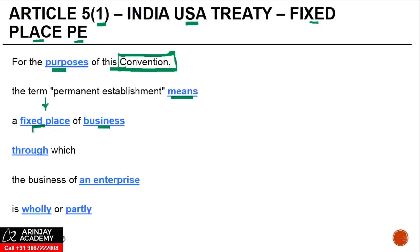When you say a fixed place of business, the question which comes up is: should it be fixed at a particular point, or if I'm carrying out certain activities within a particular geographical area, can it be said that that also amounts to a fixed place of business? That is generally known as geographical coherence, which we will understand in the next few slides. For a fixed place of business, it need not necessarily be an office — even equipment or machinery can qualify. And a fixed place need not necessarily refer to a particular point; it can even refer to a particular geographical area where the activities of the foreign company are predominantly carried on.